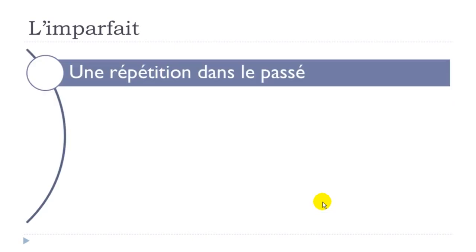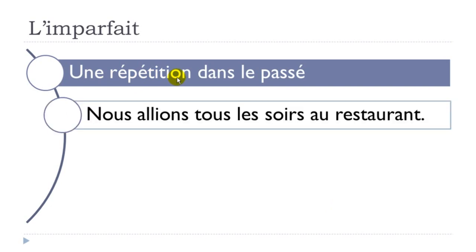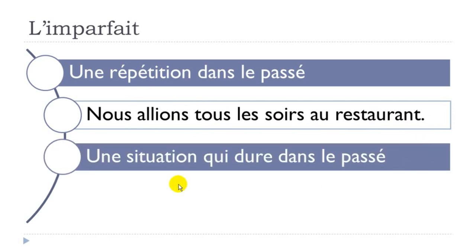Another situation is une répétition dans le passé — something that repeats itself in the past. The example: 'nous allions tous les soirs au restaurant' — 'aller' is to go, 'tous les soirs' means every evening, 'au restaurant'. So something you do that repeats itself in the past, you use l'imparfait.